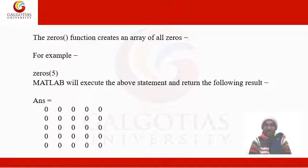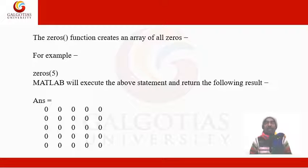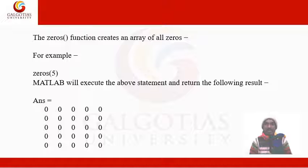The zeros() function creates an array where all values in the matrix are zero. For example, zeros(5) creates a 5×5 matrix with every element equal to zero.